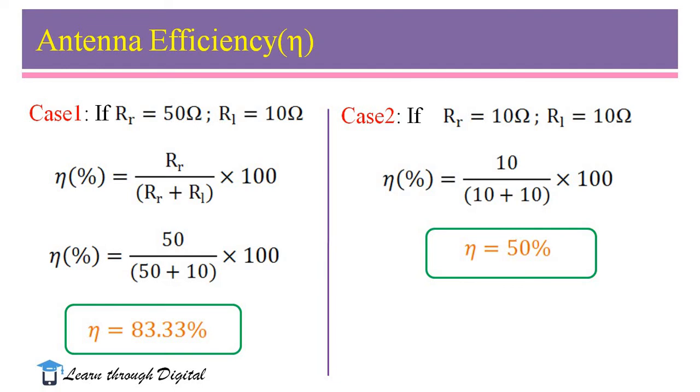In case 1, RR is higher than case 2. So therefore, from this calculation, we came to know that if the radiation resistance is high, then the antenna efficiency will also be high.